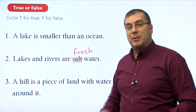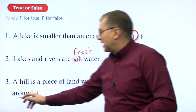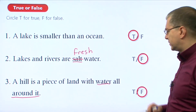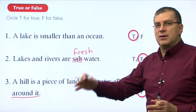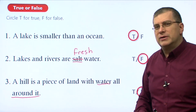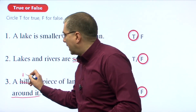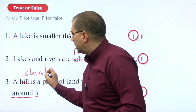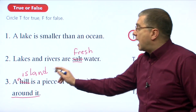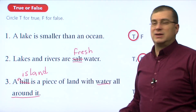Number three: a hill is a piece of land with water all around it. Does that sound right? No — that's false. A hill is just a higher area of land, and there could be other land all the way around it. What type of land has water all around it? Of course, we call that an island — pronounced 'island.' An island is a piece of land with water all around it. That would be true, but we have to change the sentence, so it's false.